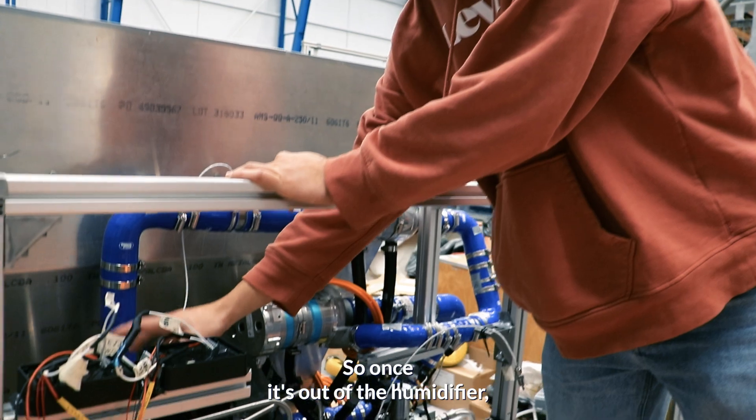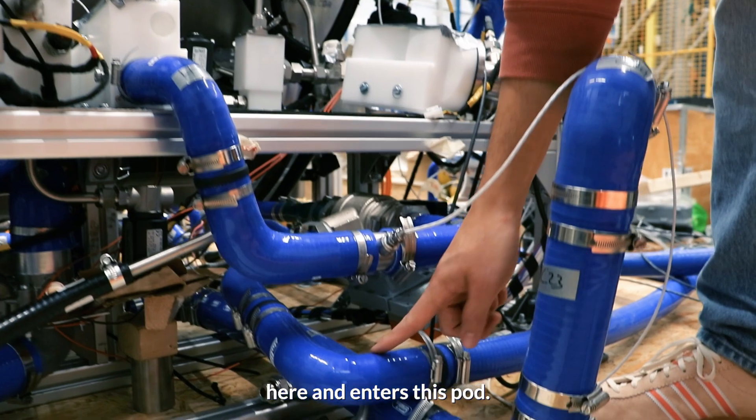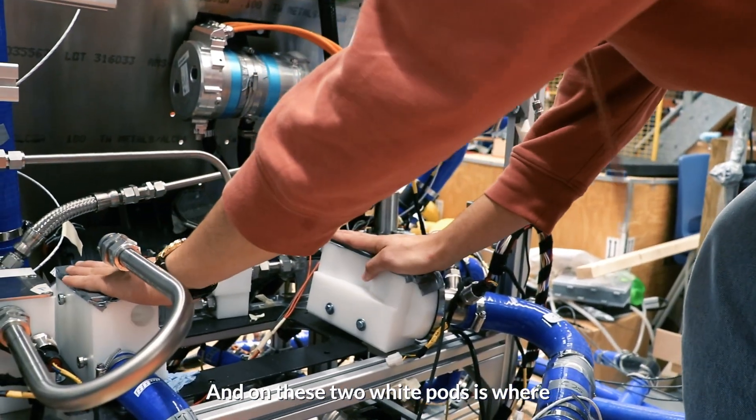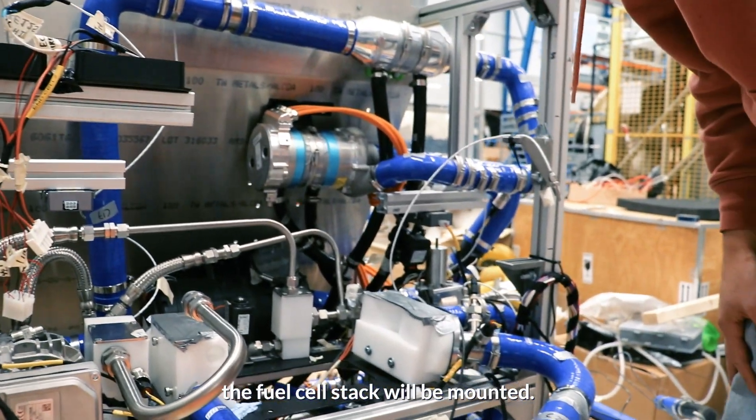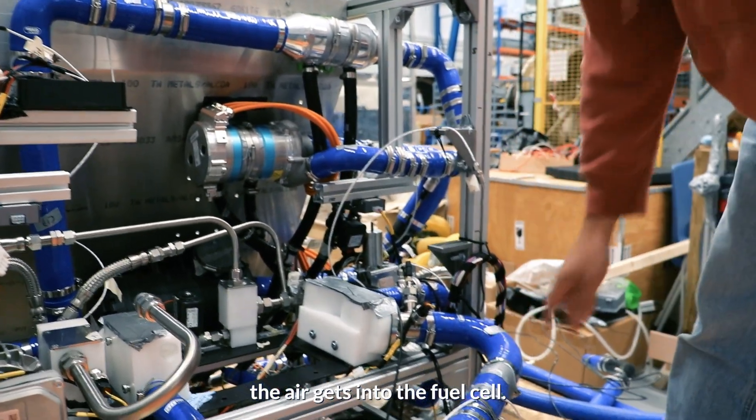So once it's out of the humidifier, it goes underneath here and enters this pod. And on these two white pods is where the fuel cell stack will be mounted. And so that's how the air gets into the fuel cell.